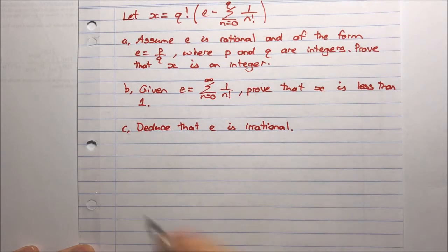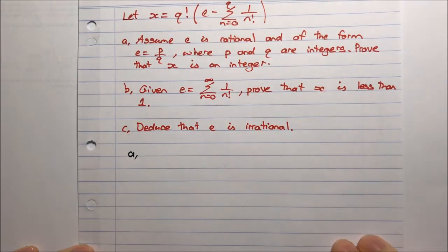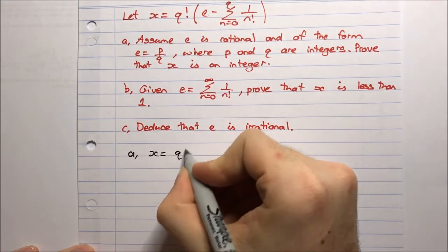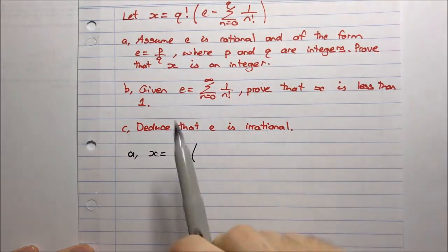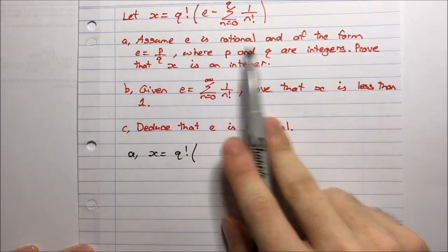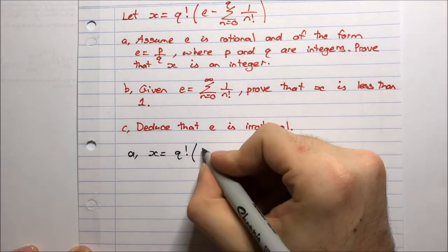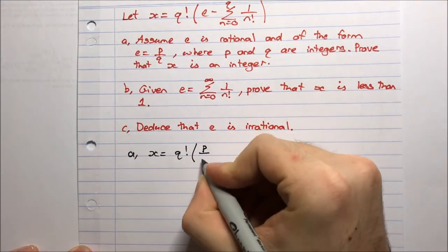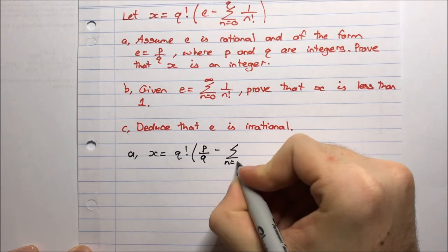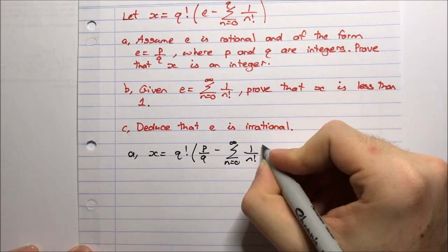Alright, let's get started with Part A. So x equals q factorial times e, but we're told that e is rational and therefore of the form p on q. So we have q factorial times p on q minus the sum from n equals 0 to q of 1 on n factorial.